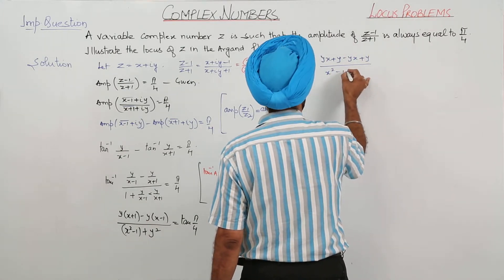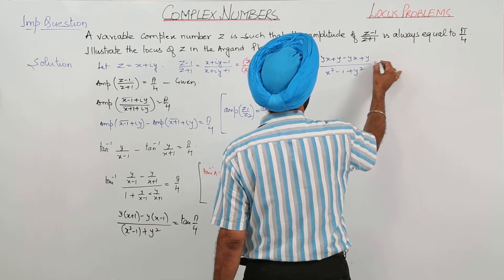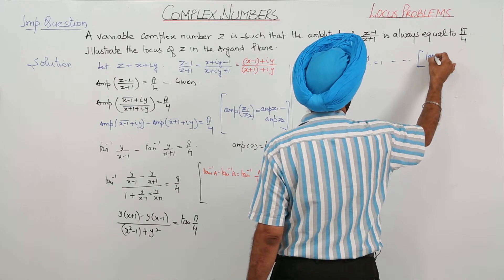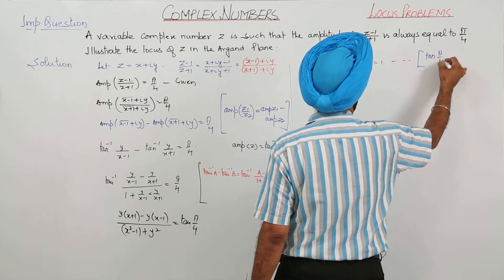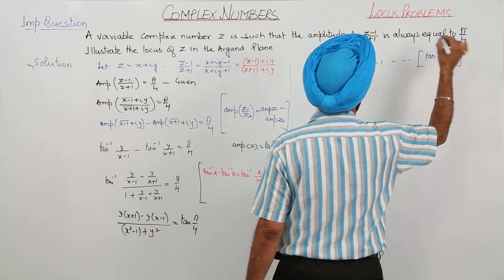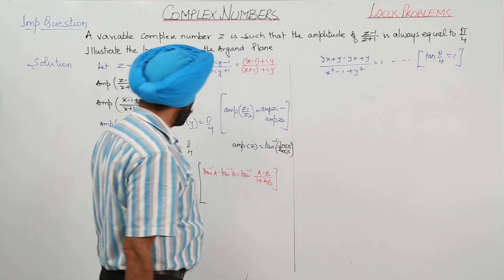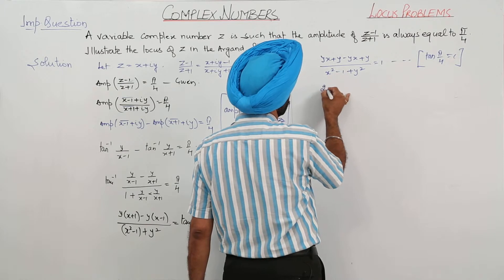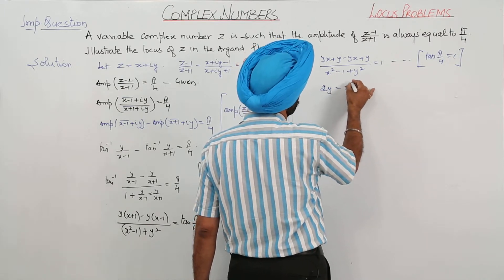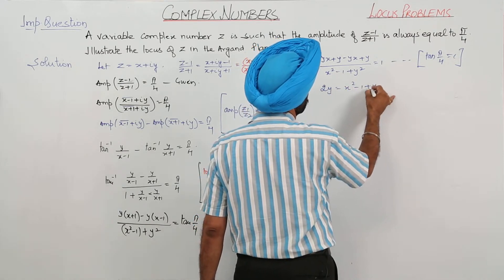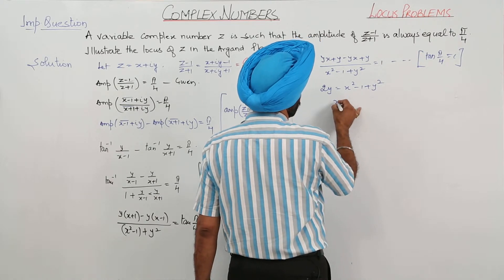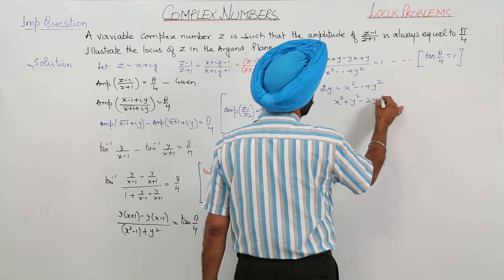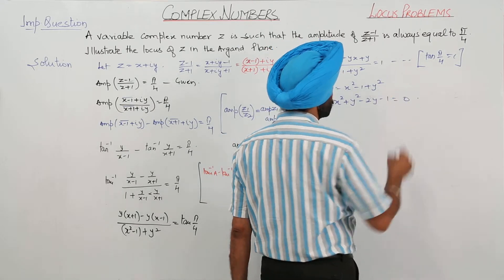So x² minus 1 plus y² equals 1, since tan(π/4) equals 1. Solving this, we get 2y equals x² minus 1 plus y², which gives us x² plus y² minus 2y minus 1 equals 0.